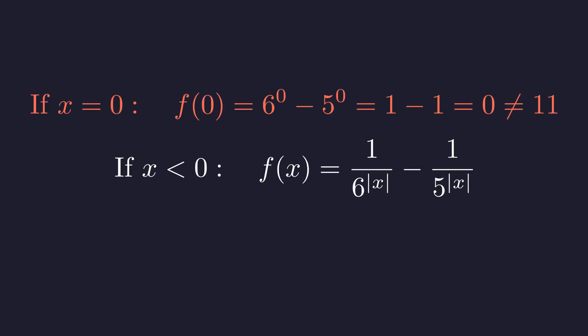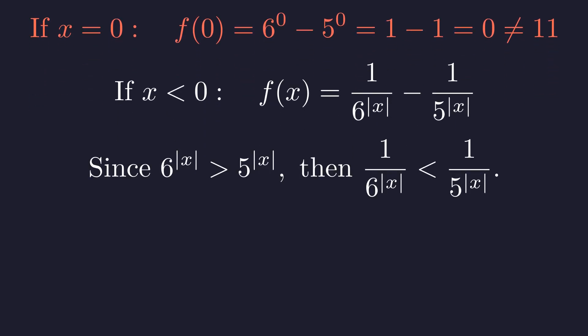Now what about negative values of x? Well, when we have a negative exponent, that's equivalent to taking the reciprocal with a positive exponent. So our function becomes 1 over 6 to the absolute value of x minus 1 over 5 to the absolute value of x. Now since the absolute value of x is positive and 6 is bigger than 5, we know that 6 to this power is larger than 5 to this power. But here's the thing about reciprocals: when you flip a bigger number and a smaller number, the inequality flips too.